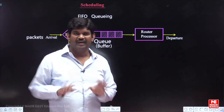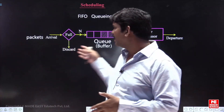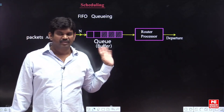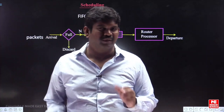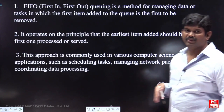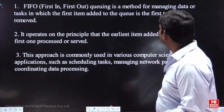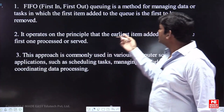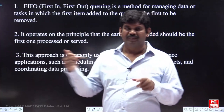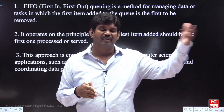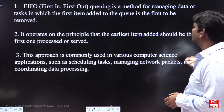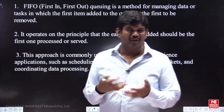So the whole idea is — when they ask in the exam what is FIFO scheduling, you can draw this diagram, make all the statements, and finally write the drawback that the waiting time is more, so it is practically not suitable for video applications because delay is more. FIFO is a queuing method for managing data and tasks in which the first item added to the queue is the first item to be removed. The packets will be entered and the first packets whichever entered will be forwarded on the other side. It operates on the principle that the earliest item added should be the first one processed or serviced.